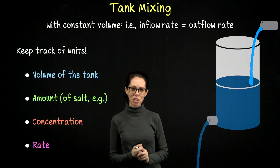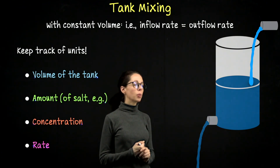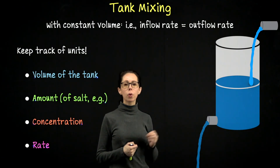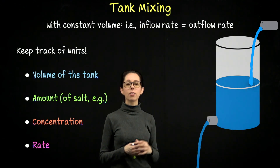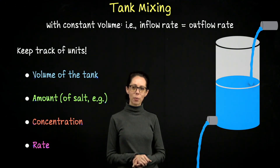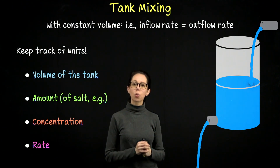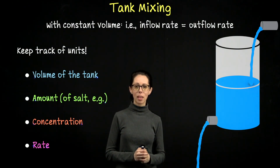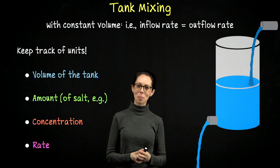You could also go the other direction, which is what we'll do with our second example. You could start with something like a salty mixture, then add pure water so that over time the salinity level is decreasing. Those are two situations we often look at with tank mixing problems: either increasing or decreasing the quantity of a substance in the tank. These are classic word problems.